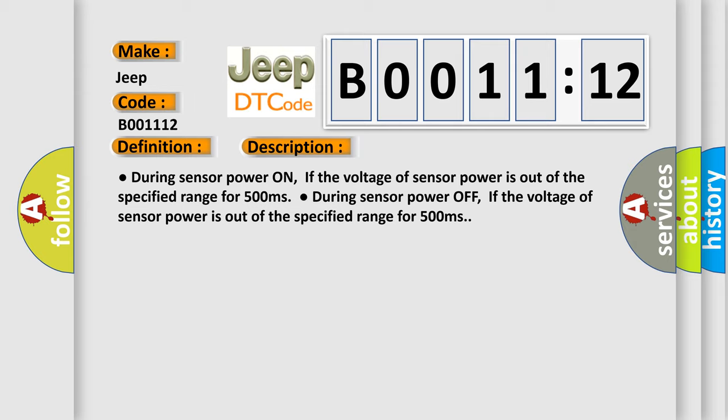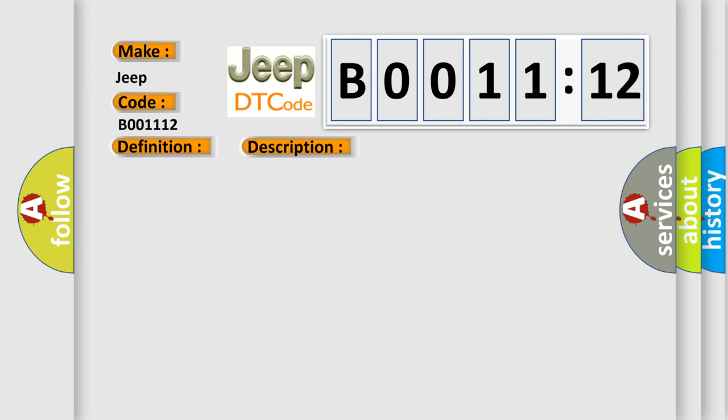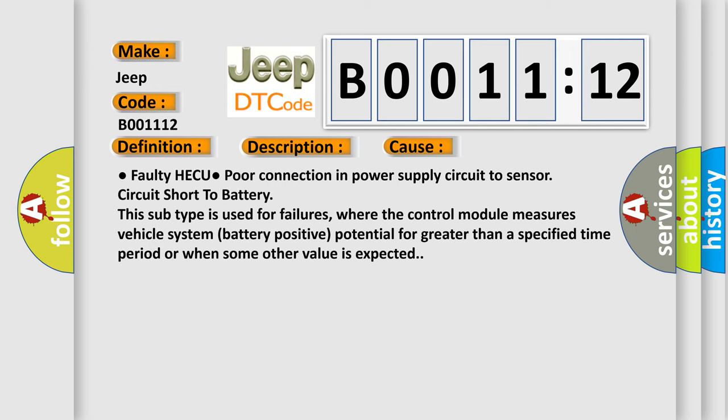This diagnostic error occurs most often in these cases: Faulty HECU, poor connection in power supply circuit to sensor, circuit short to battery. This subtype is used for failures where the control module measures vehicle system battery positive potential for greater than a specified time period or when some other value is expected.